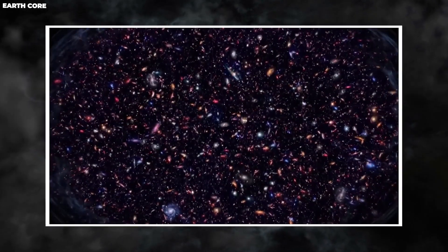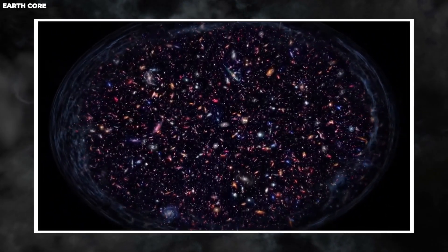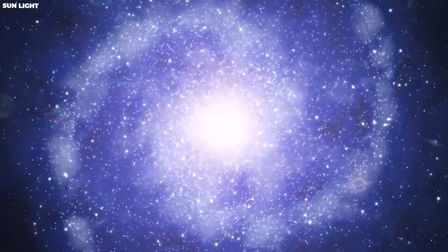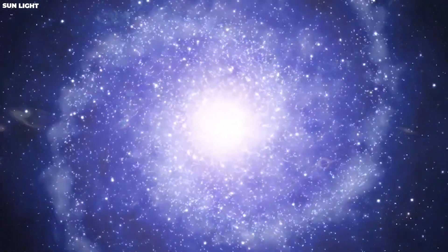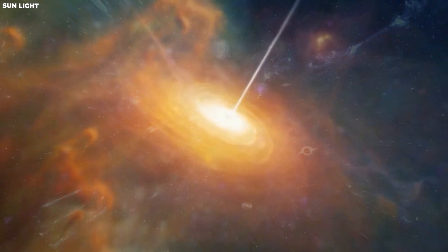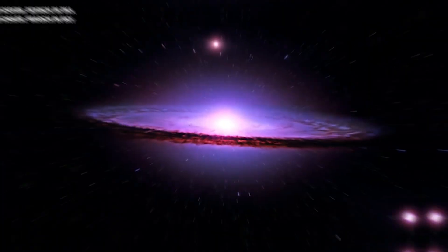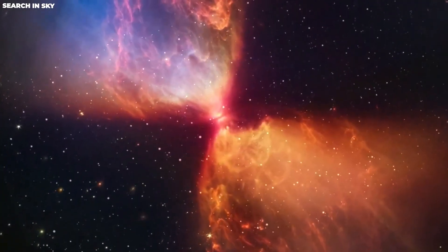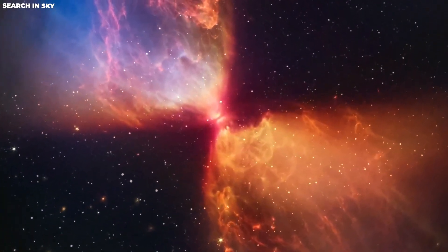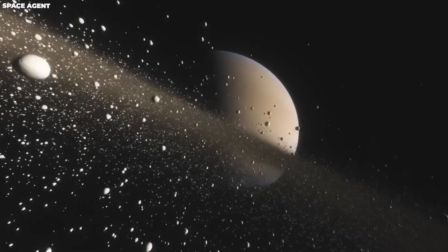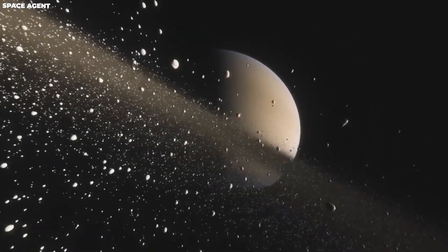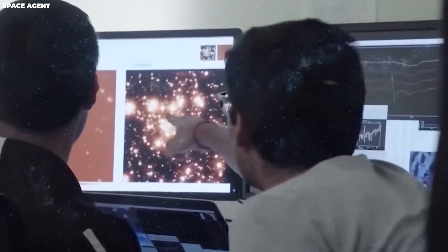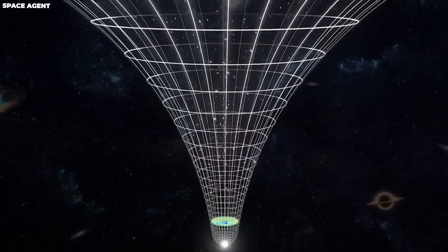You expected to see big, bumpy galaxies, but instead, you found small, smooth, and ancient ones. Kind of like expecting a big cake and getting tiny cupcakes. These new galaxies are a big surprise and don't fit with what the Big Bang Theory predicted. It's like trying to solve a puzzle, but the pieces don't match the picture on the box. The theory said galaxies should look a certain way, but they don't. Instead of being rough and messy, they're strangely smooth. It's like expecting a rocky mountain and finding a smooth hill. This is puzzling scientists because it doesn't match what they thought they would see.